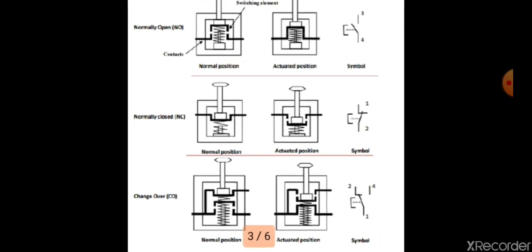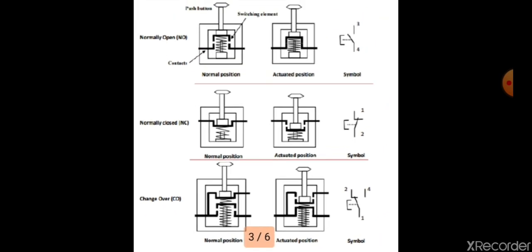In open and closed states, there are three types of push button switches. If we push it mechanically and apply a force, it opens and closes the electronic circuit, allowing us to start and stop the machine.